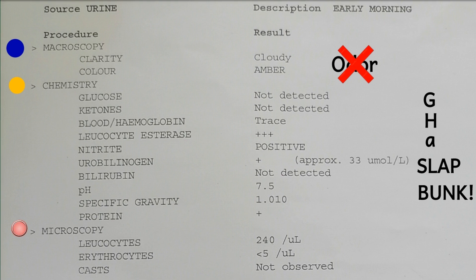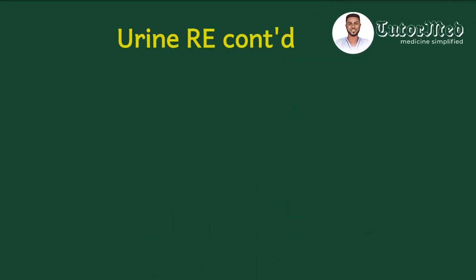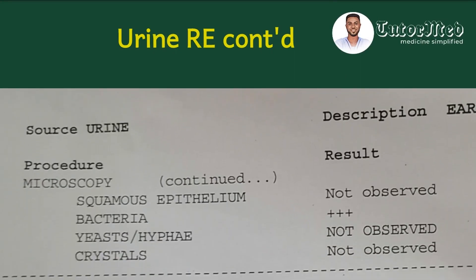Moving to microscopy, we look at three Cs and one N. We can see leukocytes — a cell — erythrocytes, and casts. Continuing on the microscopy section: squamous epithelium is also listed as part of the cells. Bacteria and yeasts or hyphae are listed under microorganisms, and crystals are also present.